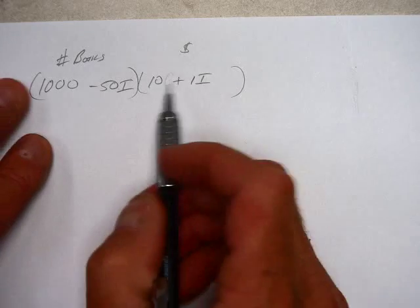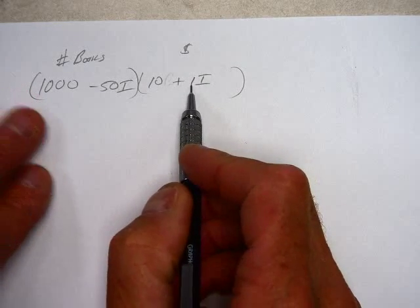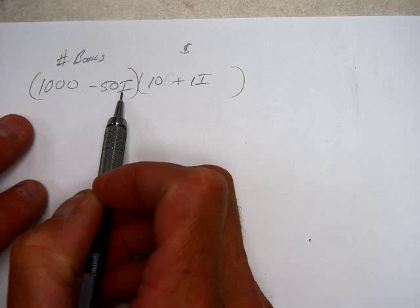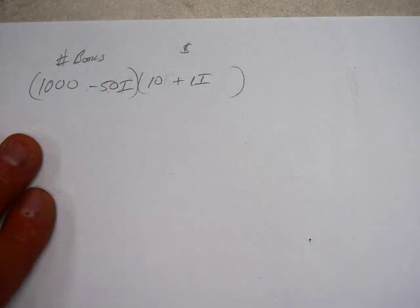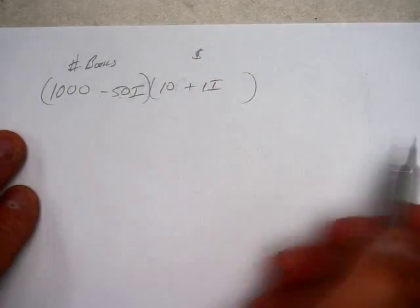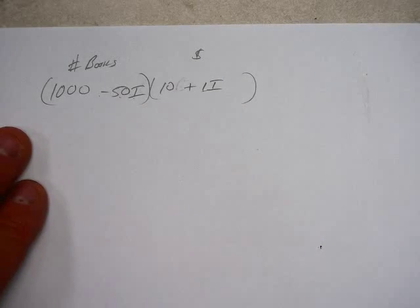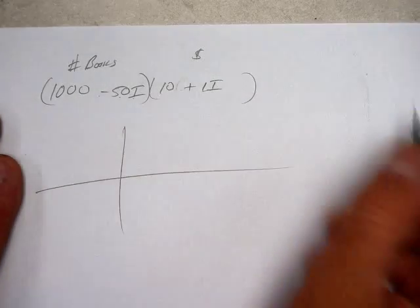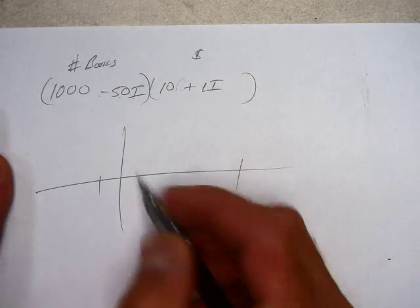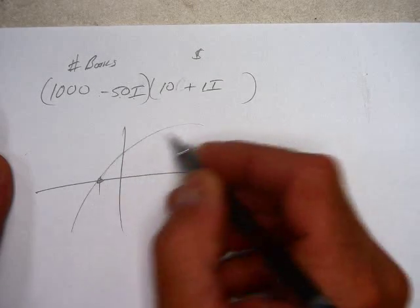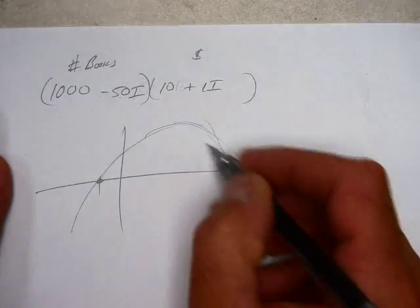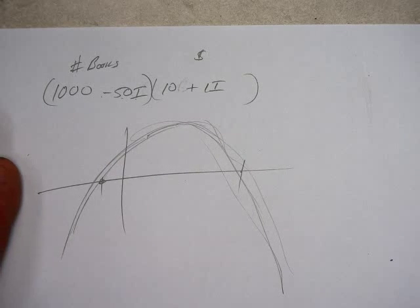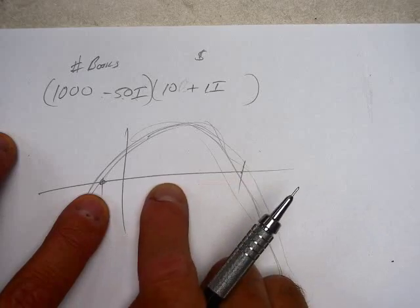They should raise the price - 50 fewer books for every increase. I'm going to change my variable. I don't like it. For every dollar increase, my cost is ten dollars plus a certain number of increases of a dollar. I was selling a thousand but I'm going to lose 50 books for every time I increase the price a dollar.